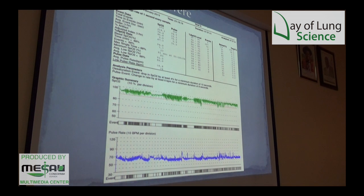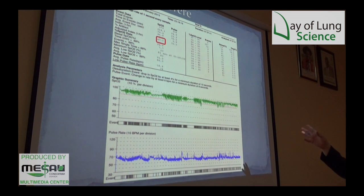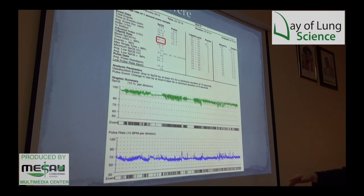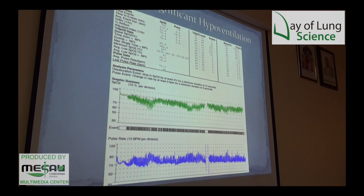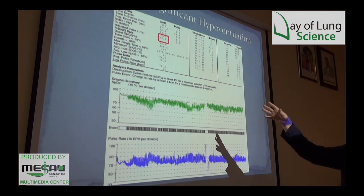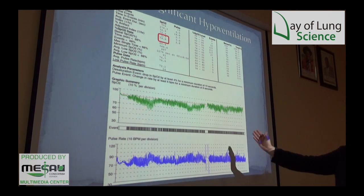Now somebody with more severe sleep apnea — the index here is 47 events per hour. The saturation trace looks almost completely abnormal with very little normal saturation, and you're getting a very spiky pulse. Moving to severe sleep apnea with hypoventilation: as patients get larger they under-breathe more, so oxygen saturations drop more extensively.